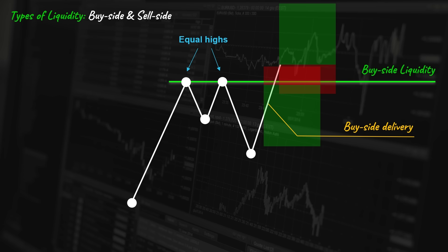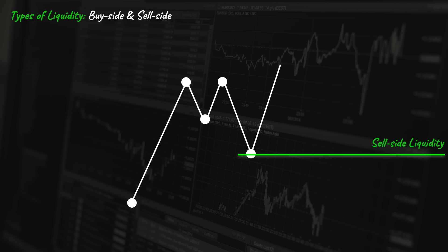Let's apply the same concept to the bearish scenario. Liquidity below a low or a group of lows represents sell-side liquidity. When the price approaches this level, the bullish traders will go long, or they will protect their previously opened long positions. The breakout traders will go short if the price breaks through this level. The animated movement aimed to grab this liquidity is called the sell-side delivery. The algorithmic price delivery has engaged the liquidity by trapping traders on both sides, and then the smart money would go long to engage the buy-side liquidity.